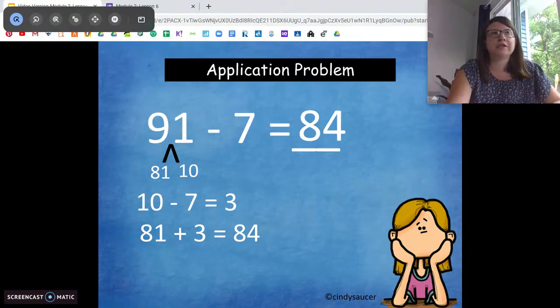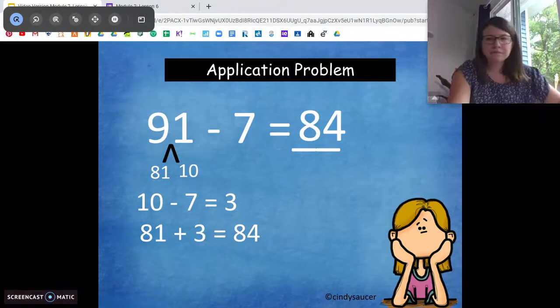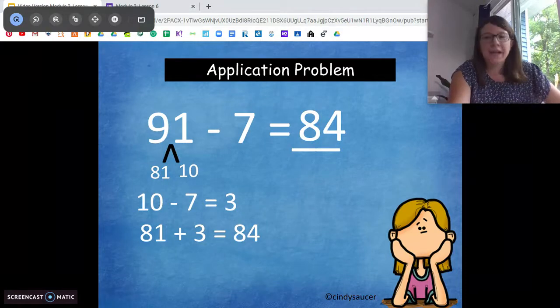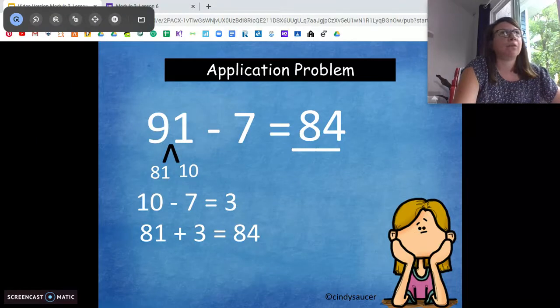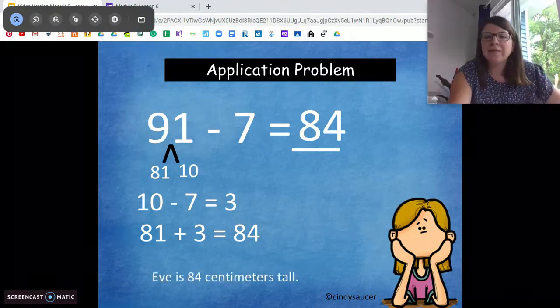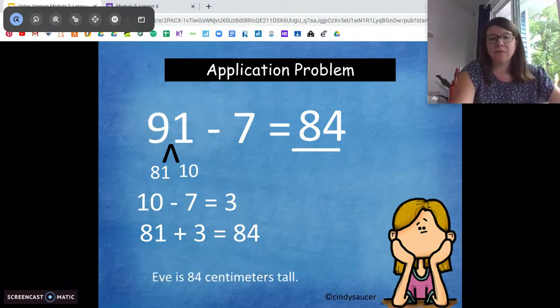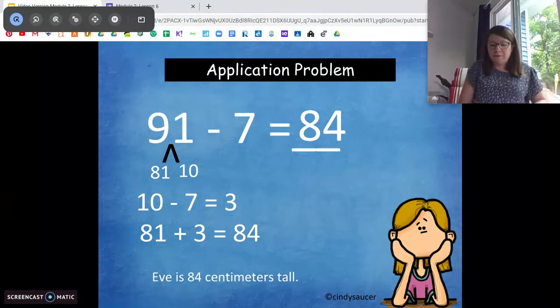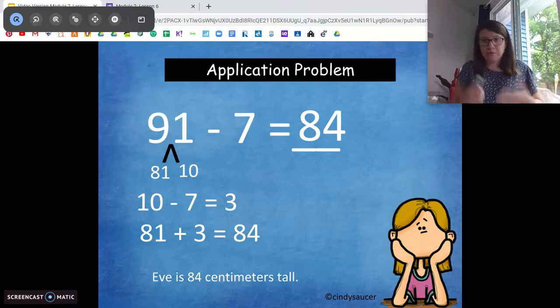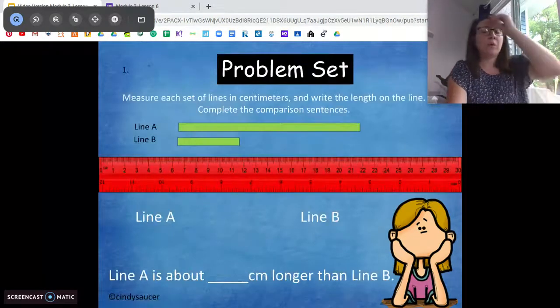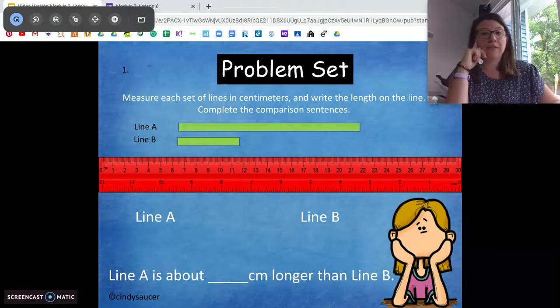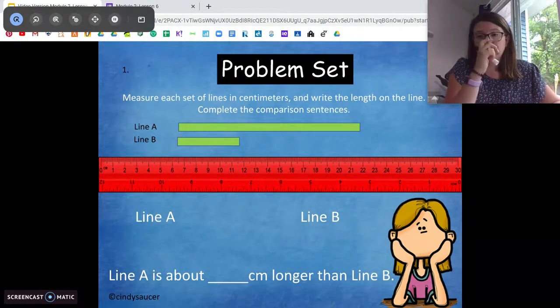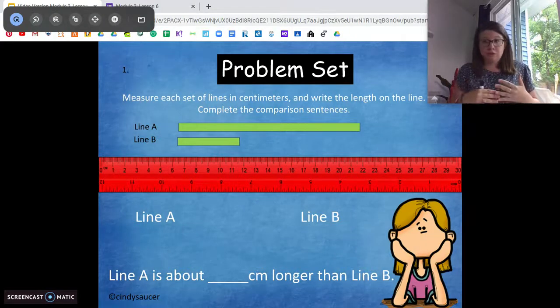Now when we do word problems, we can't just say 84. Done. We can't do that. We have to tell what 84 means. Is it 84 carrots? Is it 84 puppies? No. It's 84 centimeters. Eve is 84 centimeters tall. We need to finish it with that statement. We need to give our problems a name. All right. Now we are going to move into a couple problems. Make sure you still have your paper and pencil out.